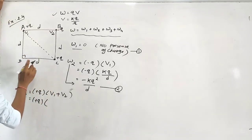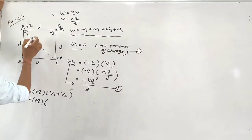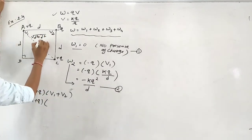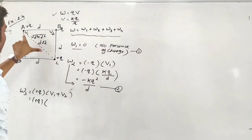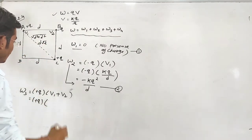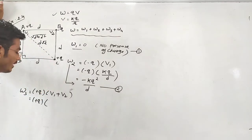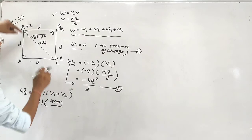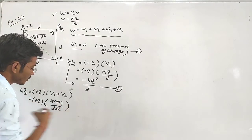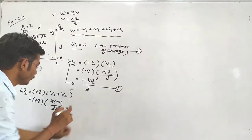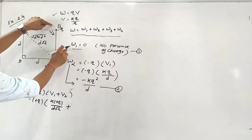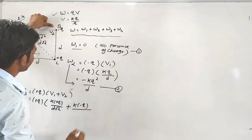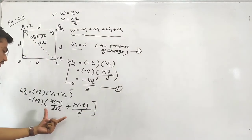From the Pythagoras theorem, writing in the triangle: this side is D and this side is D, so D squared plus D squared gives the diagonal as D into root 2. So V1 comes from the positive charge at distance D root 2 — that is V2 — and from this one, the distance is small d with charge minus Q, giving K minus Q divided by small d.